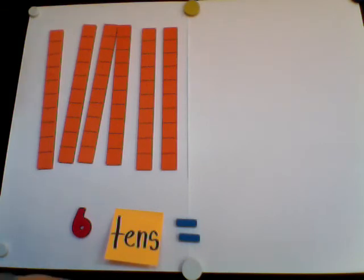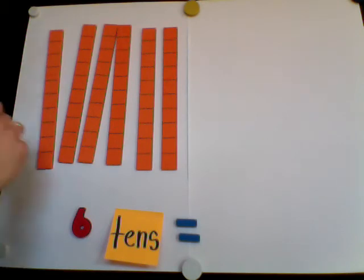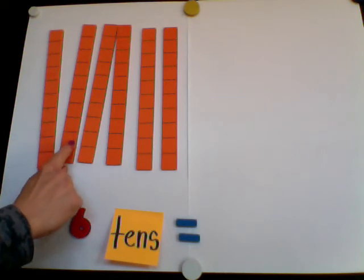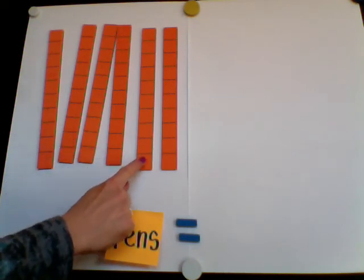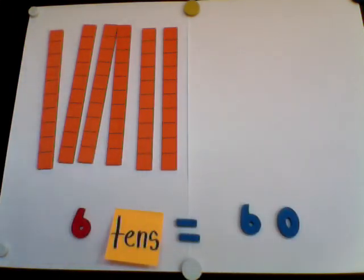And 6 tens, if I go ahead and count these boxes of jelly beans by 10, I will find out the value, or how much this group of boxes have. So 6 tens equals, well, let's find out how much 6 tens equals. 10, 20, 30, 40, 50, 60. So 6 tens equals 60.